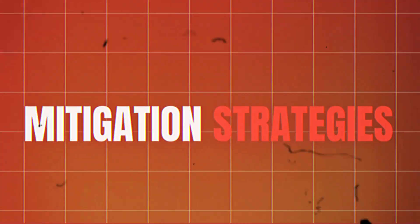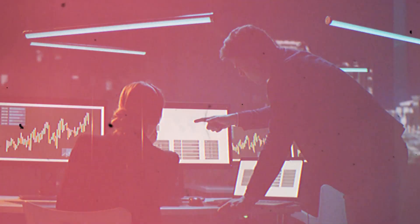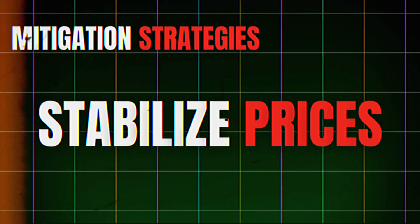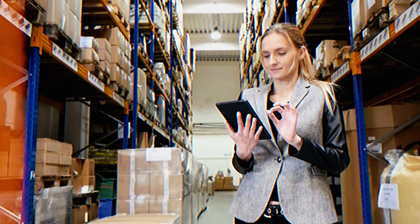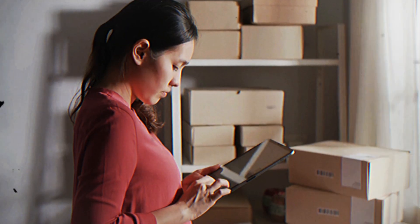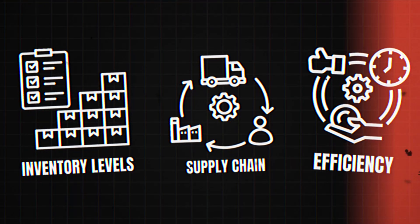Mitigation Strategies: Employ advanced analytics and use real-time data for improved demand forecasting. Reduce order batching by implementing smaller, more frequent orders. Stabilize prices to avoid large-scale promotions that cause demand spikes. Increase supply chain visibility by sharing information throughout the supply chain. Collaborative planning aligns strategies with supply chain partners, and information sharing emphasizes the importance of sharing real-time sales data, inventory levels, and demand forecasts among supply chain partners to reduce demand variability and improve efficiency.